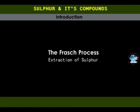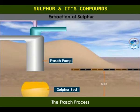Extraction of sulfur: The Frasch Process. The sulfur beds lie beneath layers of clay, sand and limestone, which makes open mining impossible due to the risk of collapse. The Frasch process is based on the fact that sulfur has a comparatively low melting point.